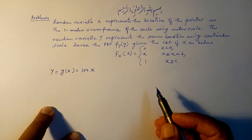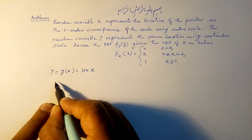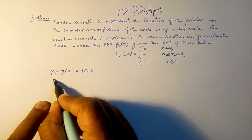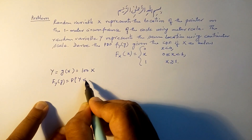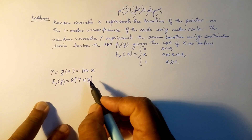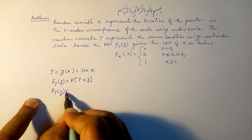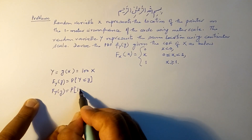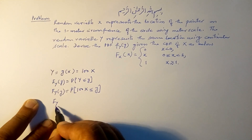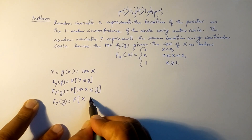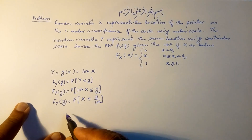In the case of derived random variables, it is easier to first find the CDF and then differentiate to get the PDF. By definition, the CDF of Y, F_Y(y), equals the probability that Y ≤ y. Since Y = 100X, we can write F_Y(y) = P(100X ≤ y).